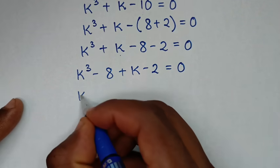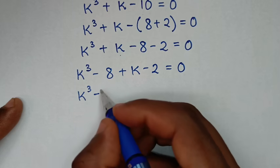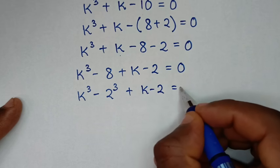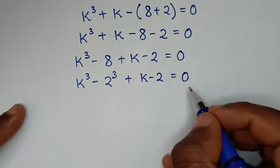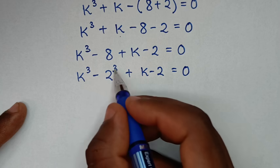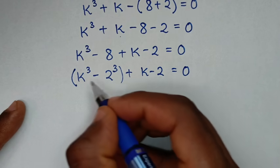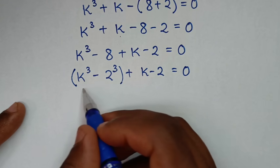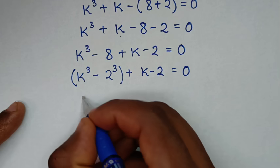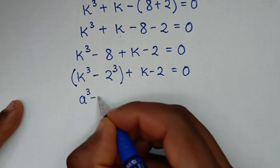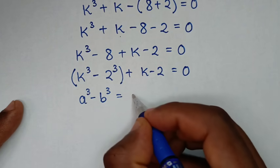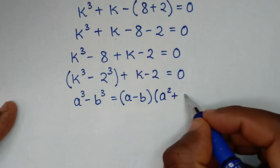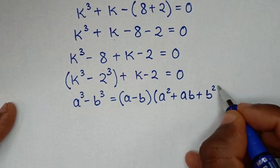Then k power of 3 minus 8 is the same as k power of 3 minus 2 power of 3, plus k minus 2 is equal to 0. We recognize this is in the form of a difference of cubes, a³ minus b³, which equals a minus b times a squared plus ab plus b squared.